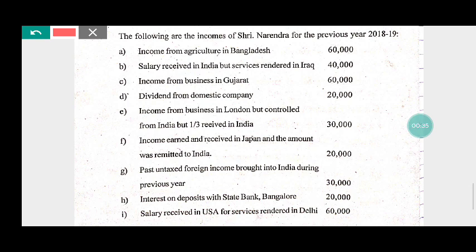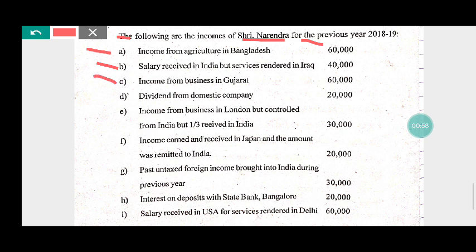The following are the incomes of Sri Narendra for the previous year 2018-19. (a) Income from agriculture in Bangladesh: rupees 60,000. (b) Salary received in India but service rendered in Iraq: rupees 40,000. (c) Income from business in Gujarat: rupees 60,000. (d) Dividend from domestic company: rupees 20,000.